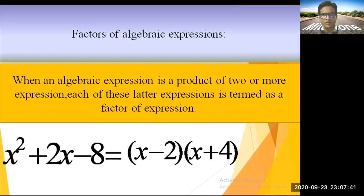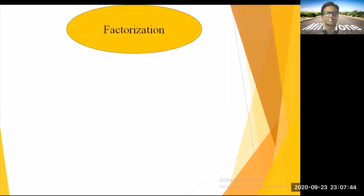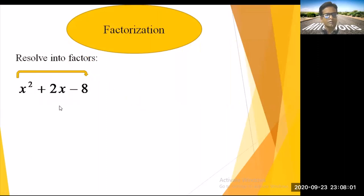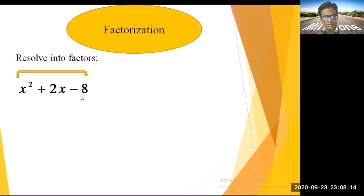Let's see factor factorization. Suppose x² + 2x - 8 is the algebraic expression. To find the factor, first we multiply the coefficient of x², which is 1, by the constant term, which is -8.